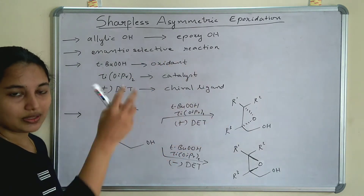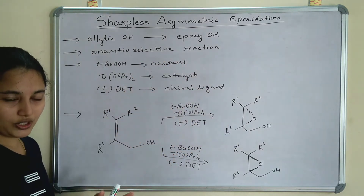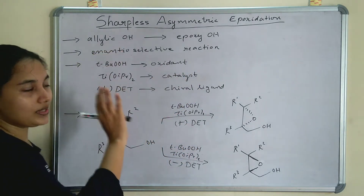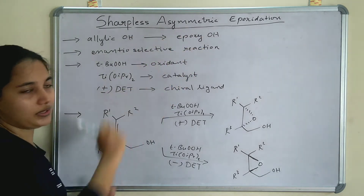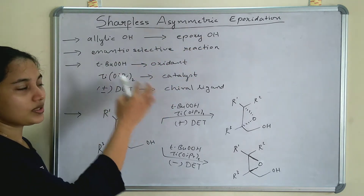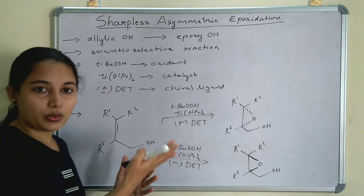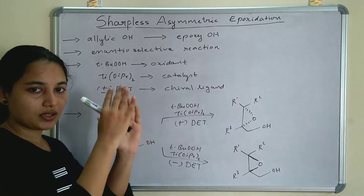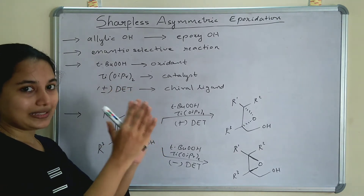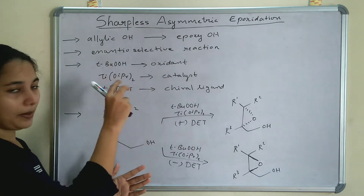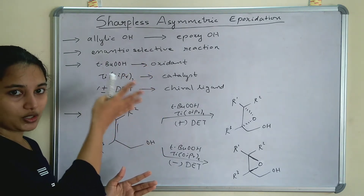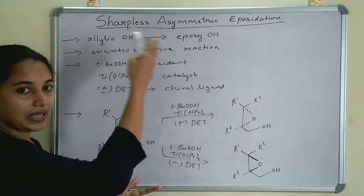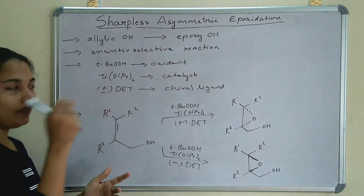Sharpless asymmetric epoxidation is a reaction in which an allylic alcohol is converted to an epoxy alcohol. Allylic alcohol is applicable to Sharpless asymmetric epoxidation. In Part 1, we saw that a double bond alkene is converted to an epoxy ring. Here also the alkene is converted to an epoxy ring, but it is an allylic alcohol — an O-H attached to a carbon attached to a double-bonded carbon.